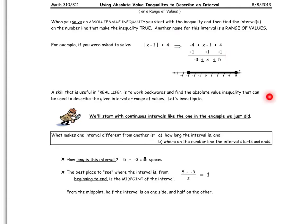A skill that's useful in real life, and real life at this point in time means SATs, ACTs, and calculus, is to work backwards and find the absolute value inequality that would give us this interval. So I want to start with negative 3 to 5, and I want to end up with x minus 1 is less than or equal to 4. What makes one interval different from another is how long the interval is, and where on the number line the interval starts and ends. How long is this interval?